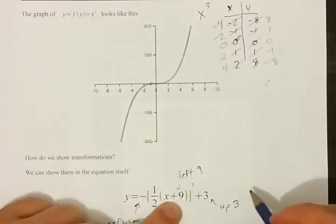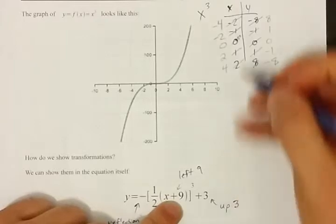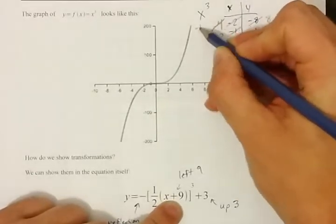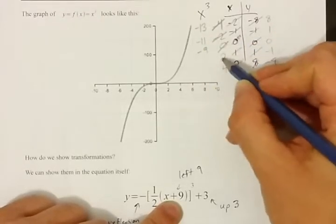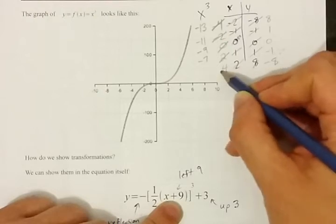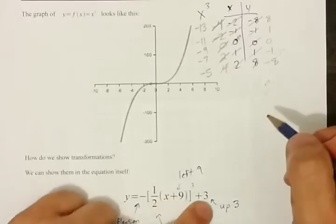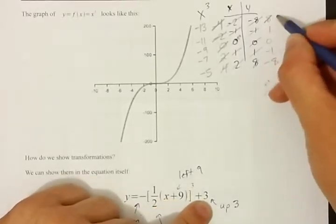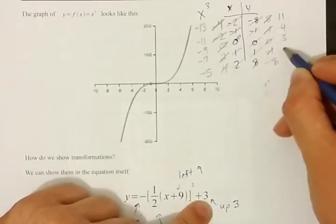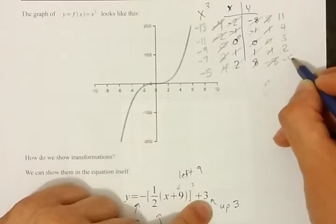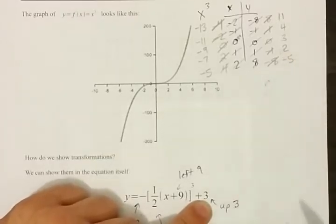Now I'm going to shift everything left 9 — that's subtracting 9 from each of my x's. Remember, horizontal stuff is backwards. Negative 4 becomes negative 13, negative 2 becomes negative 11, 0 becomes negative 9, 2 becomes negative 7, and 4 becomes negative 5. Then I have to shift everything up 3 — that's easy. I add 3 to each y-value. Be careful when adding 3 to negatives — it becomes more in the positive direction.